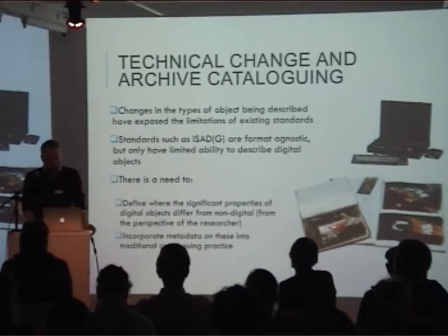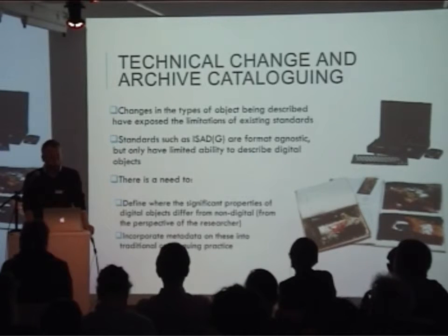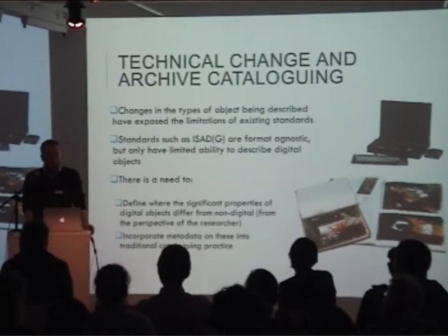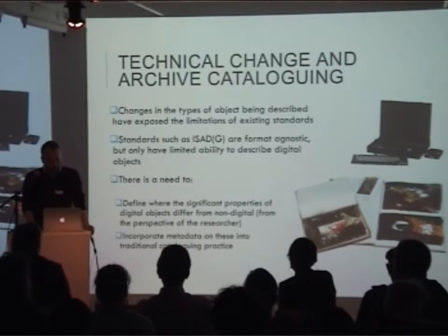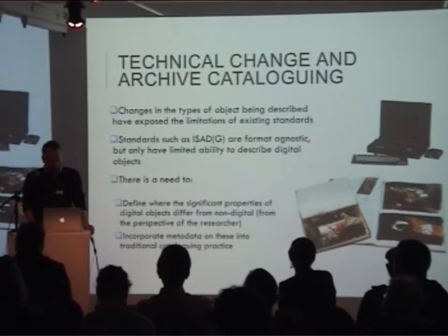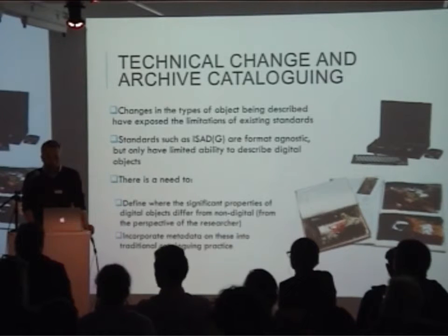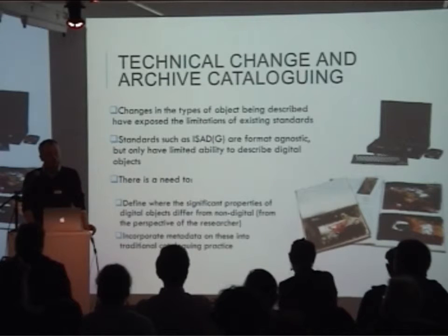These changes include the obvious changes in the types of material being catalogued, but also changes in cataloguing systems and in researchers' requirements, all of which have implications for cataloguing. While archive cataloguing is designed to be format agnostic, current standards were largely composed in a pre-digital world and reflect the concerns of an archive profession whose practice is rooted in managing paper records.